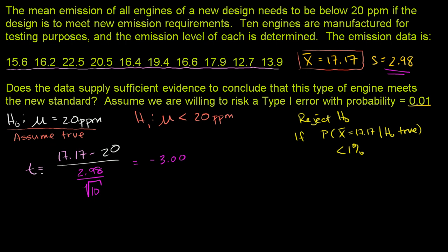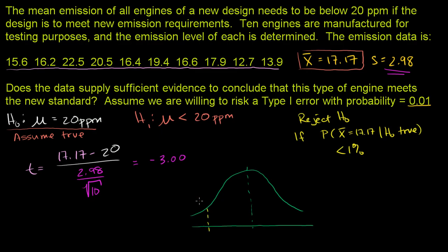Since t-statistics follow a t-distribution, we need to figure out the probability of getting a t-statistic of negative 3 or less, and whether that is less than 1%. We have a normalized t-distribution, and there is some threshold t-value where the probability of getting a t-value less than that threshold is exactly 1% — that entire tail area in yellow represents 1%.